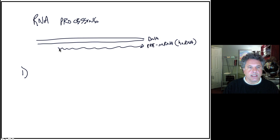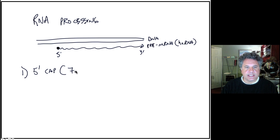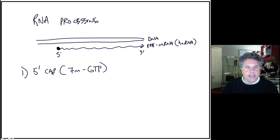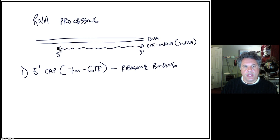The first processing step — and when I say first I don't necessarily mean a temporal order, these can occur simultaneously or in sequence — is that a 5' cap is added to the 5' end of the pre-mRNA. That 5' cap consists of a 7-methylguanosine triphosphate. Unlike the prokaryotic messenger RNA which has a ribosome binding site in its sequence, this 5' cap serves as the ribosome binding signal for the messenger RNA.